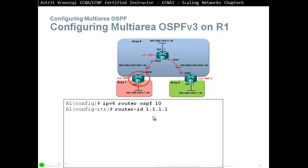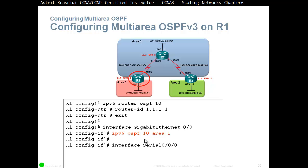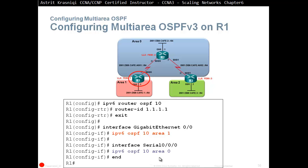Configuring Multi-Area OSPF version 3: you say 'ipv6 router ospf 10' to enable OSPF there, give a router ID, and that's it — there's no network command. You exit and then go per-interface instead. So you go to the GigabitEthernet interface and say 'ipv6 ospf 10 area 1', then go to the other interface, link it to that process, and tell it which area that link belongs to.